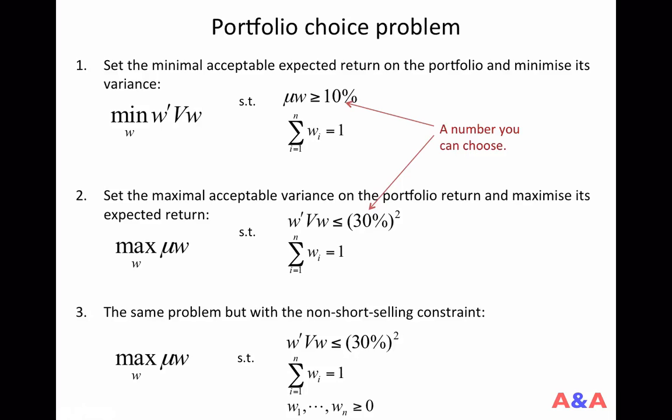That means that you short-sell 1,000 pounds worth of asset 2 to raise 1,000 pounds and spend that money on some other assets. If you forgot what short-selling is, we studied this in a previous class, so please revise it.